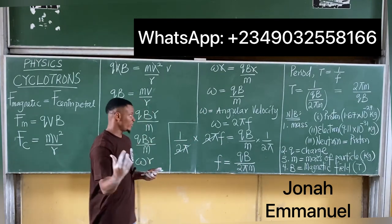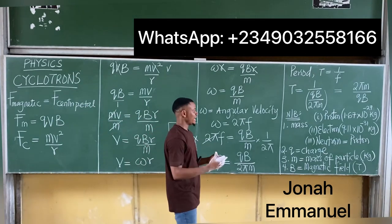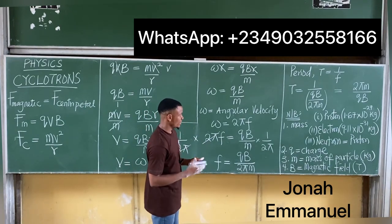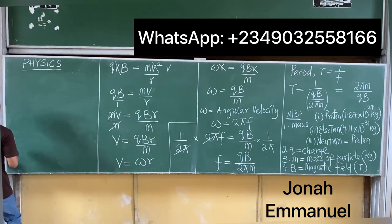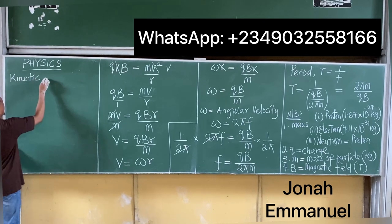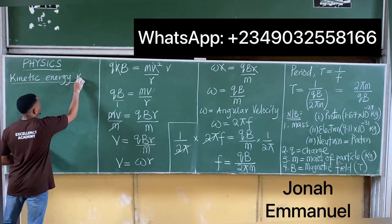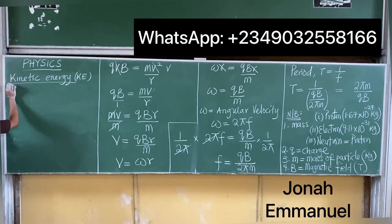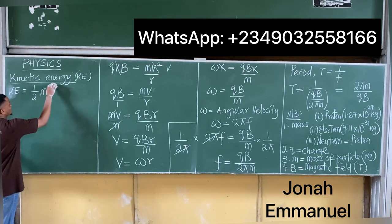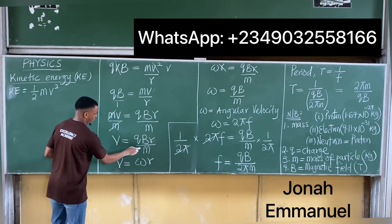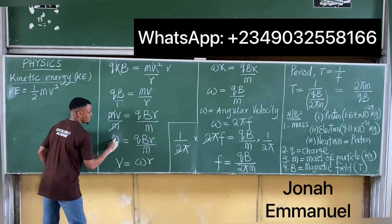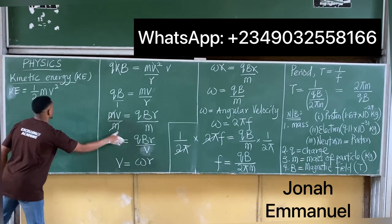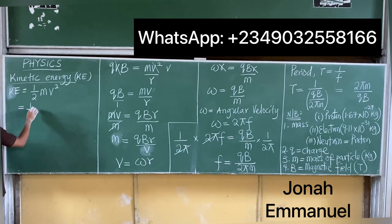Now let's look at kinetic energy. If the body is being accelerated it has kinetic energy. We know KE = ½mv². From our velocity formula v = qBr/m, we can make m the subject and substitute into the KE expression.